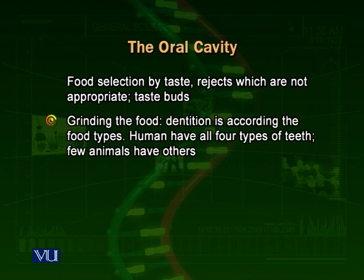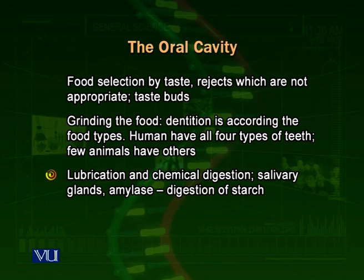The second function of the oral cavity is to grind the food. We have teeth to grind the food because the next parts of the alimentary canal — the esophagus, stomach, and intestines — need smaller pieces, while food ingested by the mouth is in larger pieces. Teeth help in grinding and converting food into smaller pieces. Then the next function of the oral cavity is to lubricate the food — that is, to add some water and salts to it. The submandibular glands, sublingual glands, and salivary glands all produce mucus and contain enzymes.